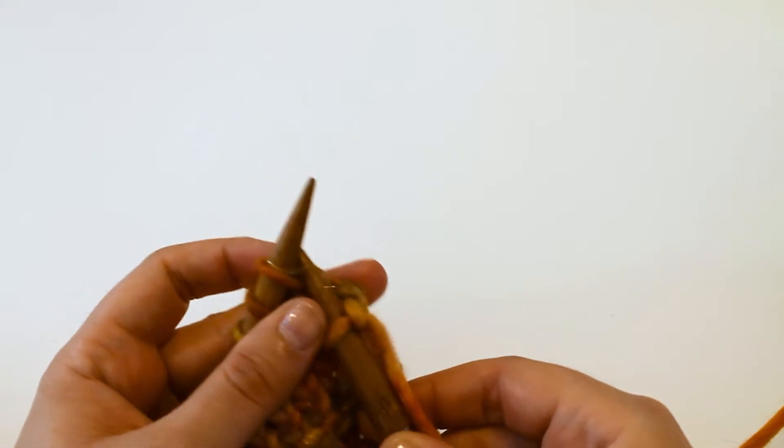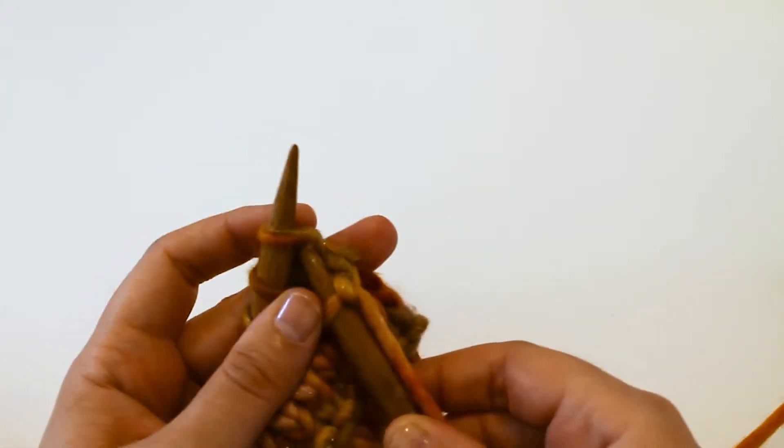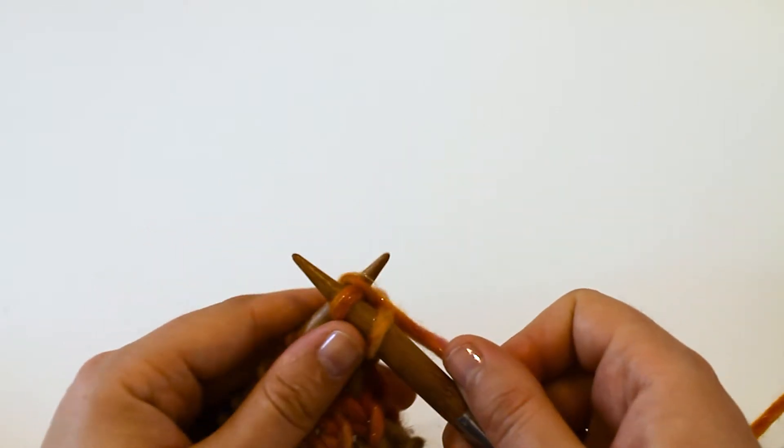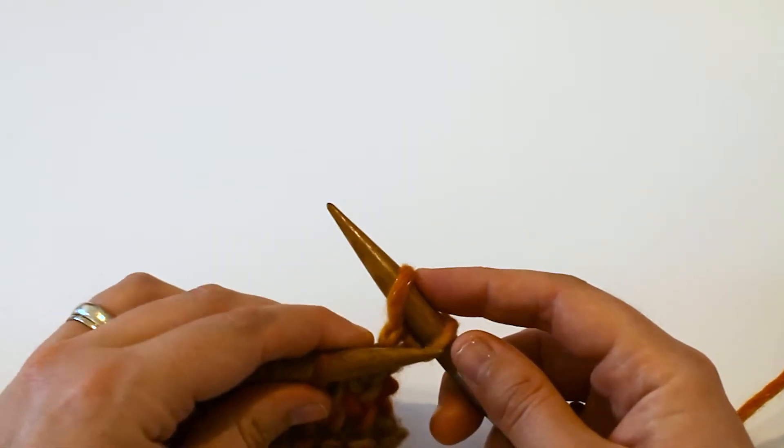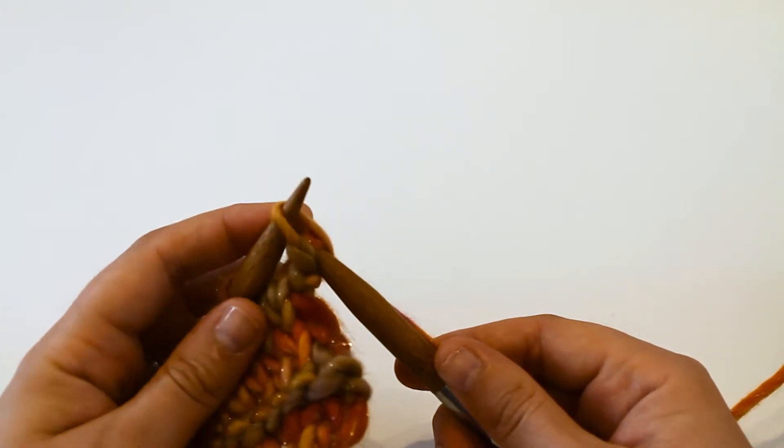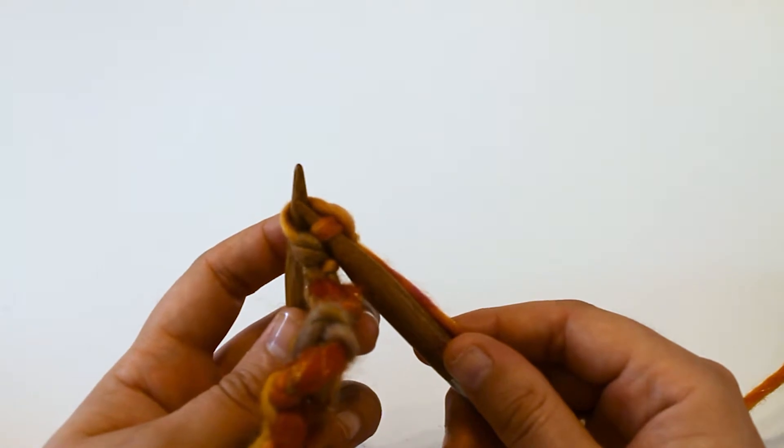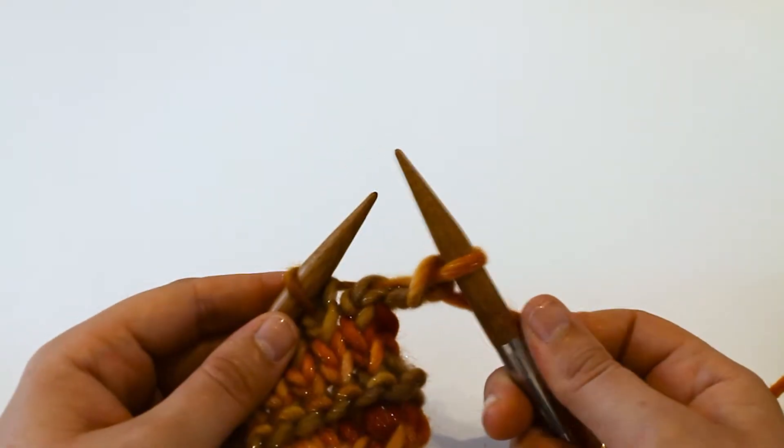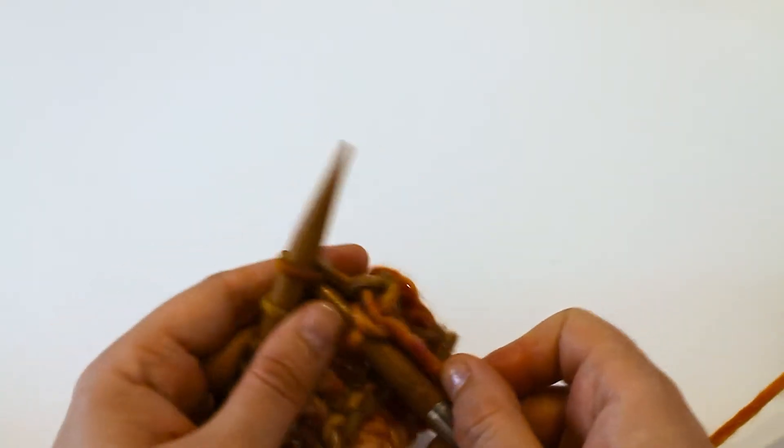But your second one you're going to knit, pop it through, wrap your yarn around, pull it through as another knit stitch but you want to hook the first loop and take it over the second, like so. So you've turned two stitches into one.